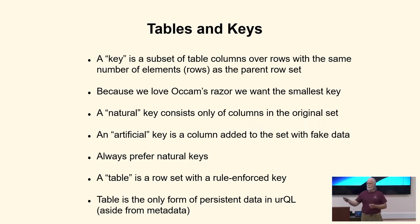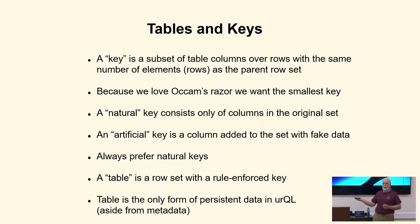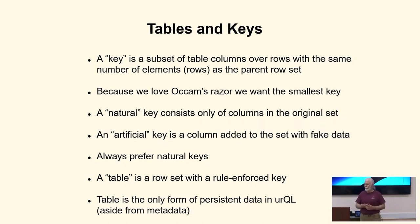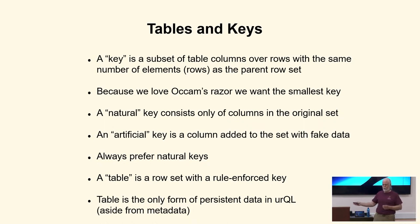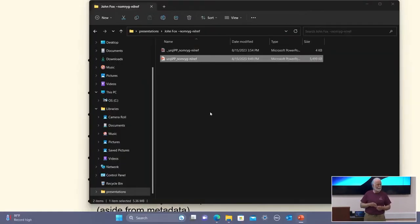If your key exists only of columns already in your set, that is called a natural key. The alternative is making up fake data and using that as a key — that is called an artificial key. From my experience in the real world, probably 95% of databases out in the wild use artificial keys. It's a whole other talk about why natural keys are better.